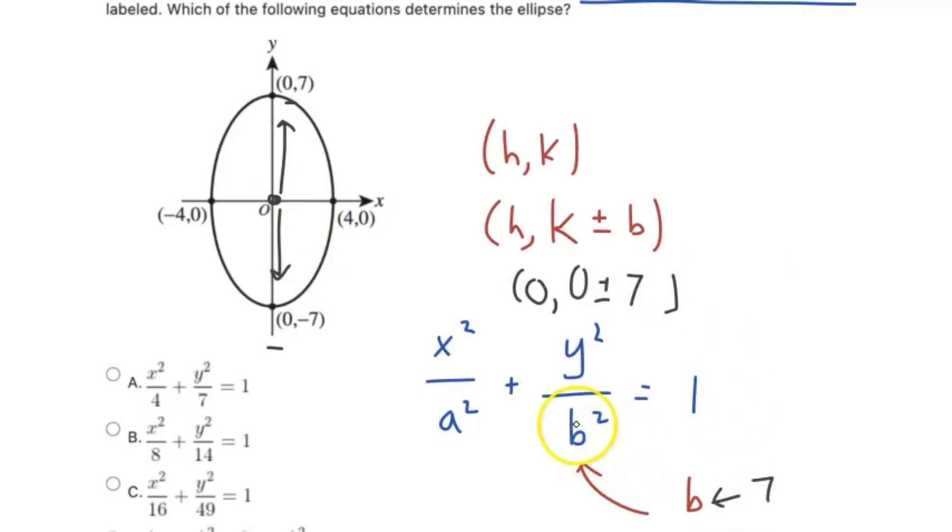And so we can confidently say that the B value is 7. And we know in our standard form, the B value is squared under that Y squared. And so 7 squared is 49, and the only equation here that has a B squared value of 49 is option C, and so that is our correct answer.